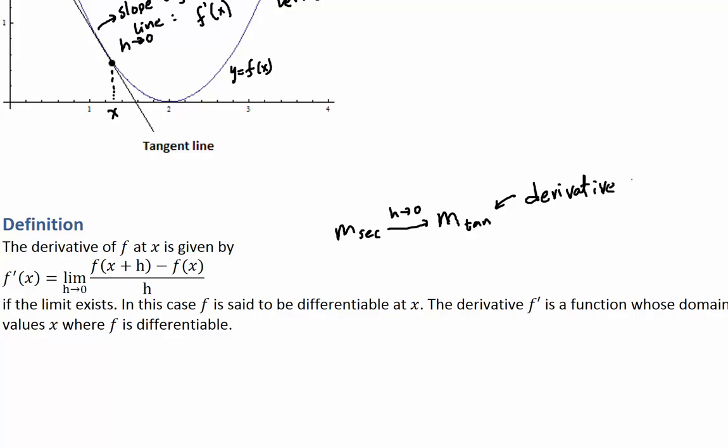And remember, whenever we're taking limits, there was the possibility that the limit didn't exist. Remember that could happen. If this limit does exist, then this function is said to be differentiable at this point x. So differentiability, just like continuity, depends on what point you're talking about. So f is said to be differentiable at x, and the derivative is a function whose domain is the set of values where x is differentiable.